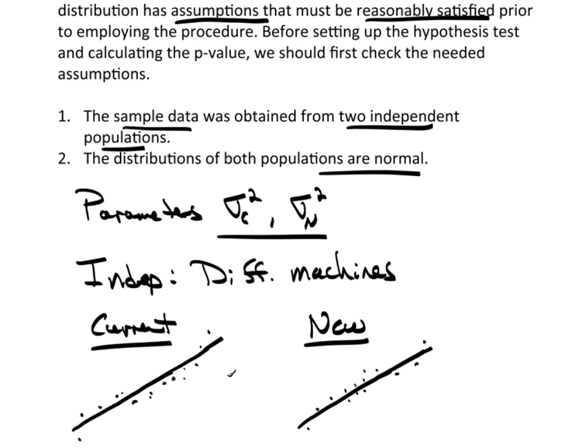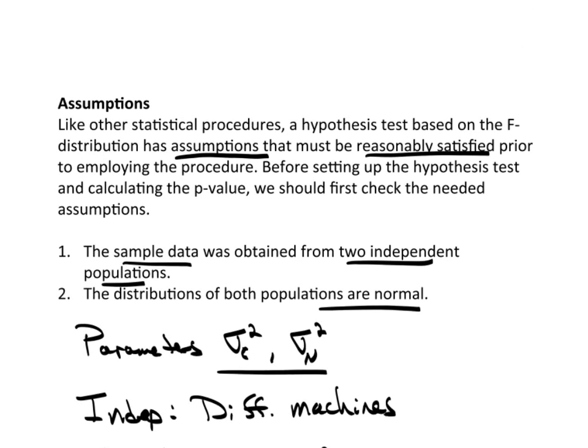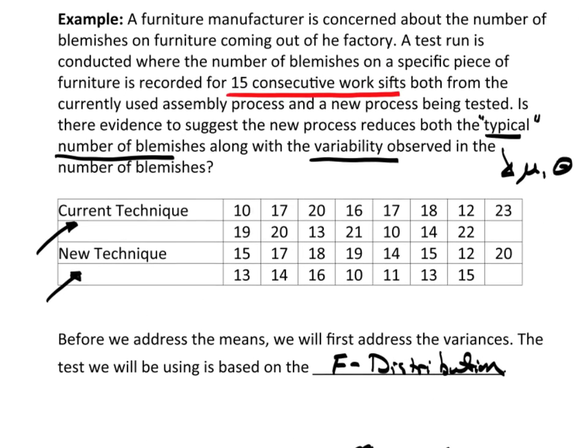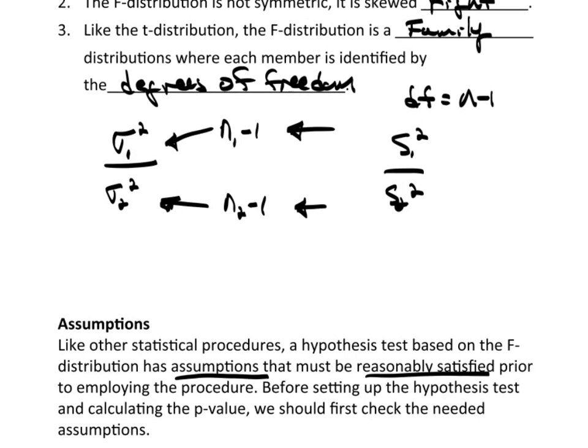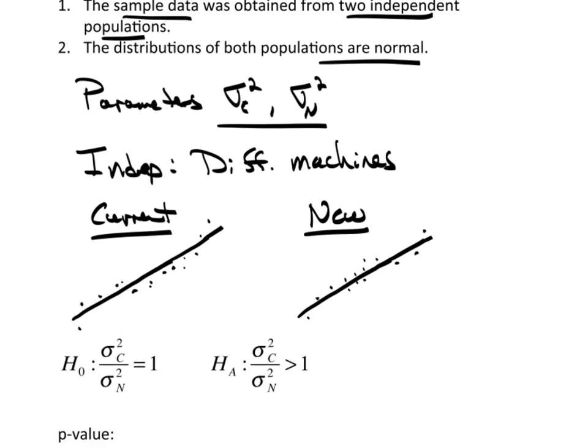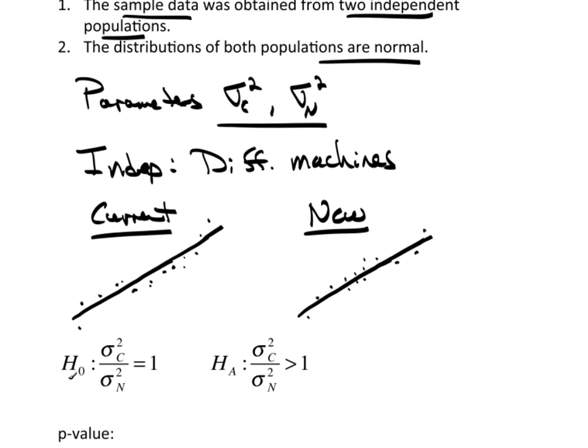Now, I need to set up the hypothesis test. And before I do that, I need to go back up and read the problem again, make sure I understand what I'm looking for. We want to know, is there evidence to suggest a new process reduces both the typical number of variables along the variability. So, I'm looking for smaller variability amongst the new process. So, I have the current, my null hypothesis is the current variance divided by the new equals one. This means that they're the same. Algebraically, this is the same as saying sigma squared current is equal to sigma squared new. Because, if I divide by sigma squared new, I'll get one over here and I get this ratio. So, algebraically, that's not a big surprise.